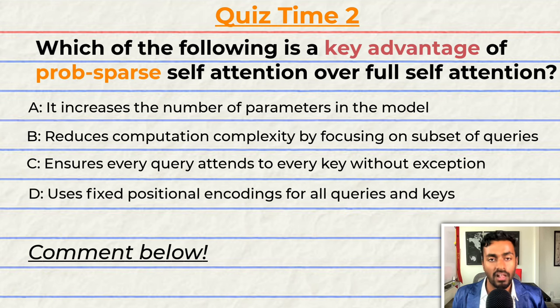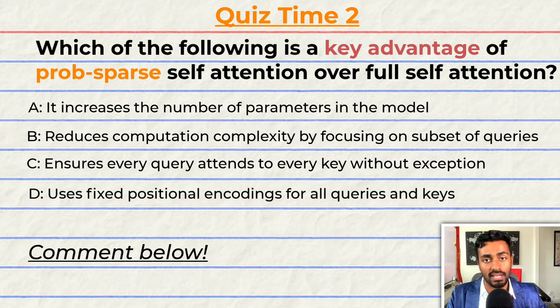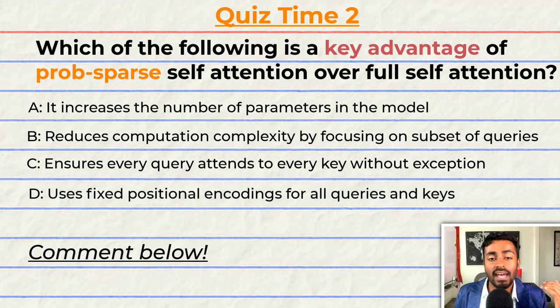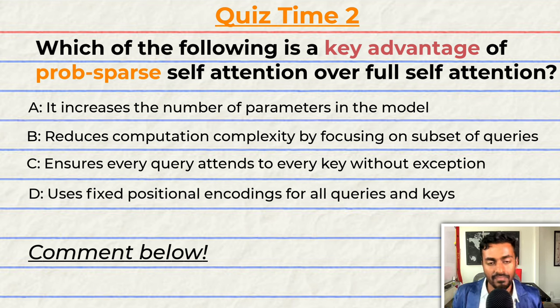Quiz time again. Which of the following is a key advantage of prob-sparse self-attention over full self-attention? A: it increases the number of parameters in the model. B: it reduces the computational complexity by focusing on a subset of relevant queries. C: it ensures every query attends to every key without exception. Or D: it uses fixed positional encoding for all queries and keys. Comment your answer down below. That's it for quiz two and pass two of this explanation — keep paying attention because I will be back to quiz you.